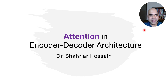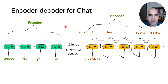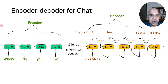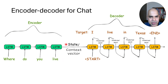Welcome back. Today we are going to discuss attention in encoder decoder architecture. Earlier we discussed that an LSTM can be used for the encoder and another LSTM can be used as the decoder. Here both the encoder LSTM and the decoder LSTM are unfolded. For the encoder we have four words — 'where do you live?' — that's why four unfolded LSTMs are shown. But in reality this is just one LSTM which is working recursively.